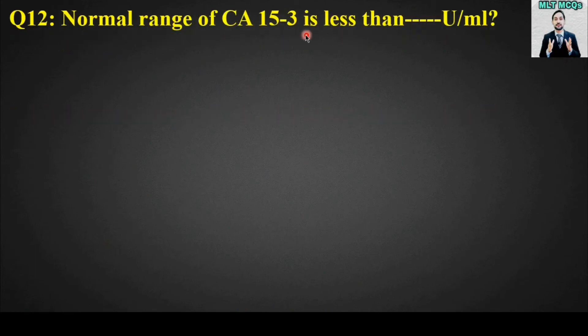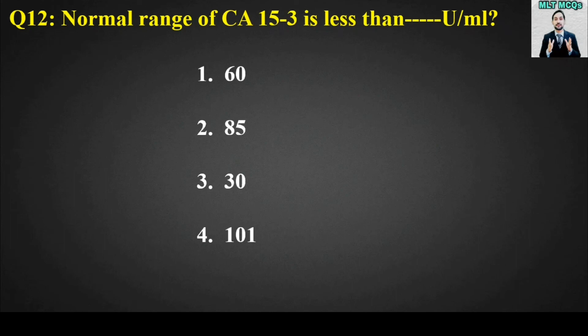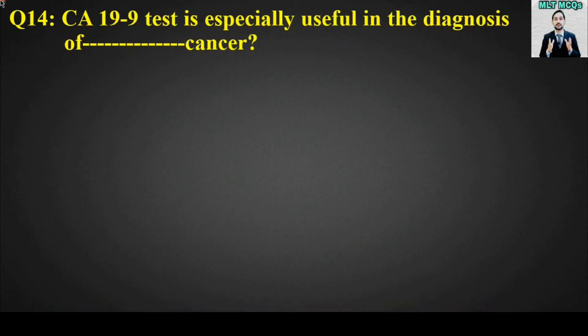MCQ number twelve: The normal range of CA-153 is less than blank units per milliliter. Options are 60, 85, 30, or 101. The right answer is option number three: the normal range of CA-153 is less than 30 units per milliliter.